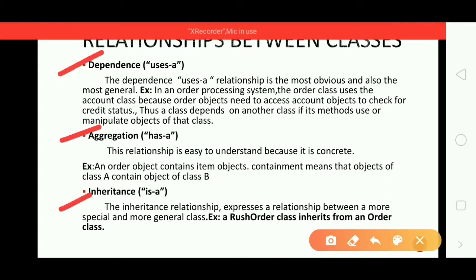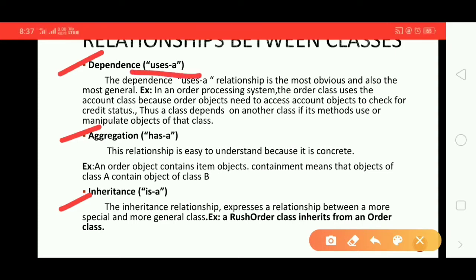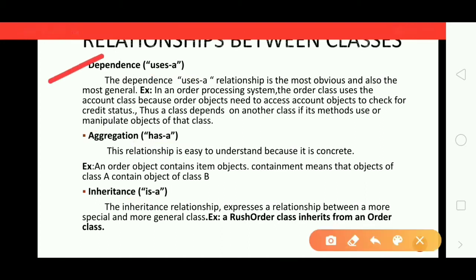Next we have relationships between classes. There are three types: dependence ('uses a'), aggregation ('has a'), and inheritance ('is a'). Dependence, the 'uses a' relationship, is the most obvious and also the most general one.